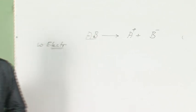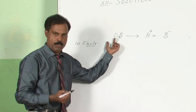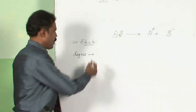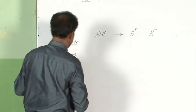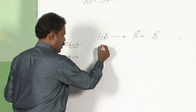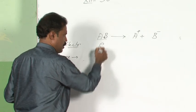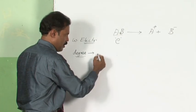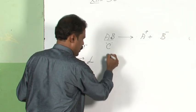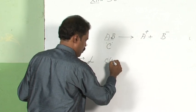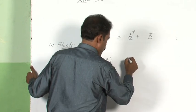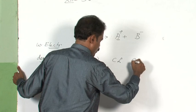As you know, weak electrolytes do not dissociate completely — the dissociation will be only partial. Consider the reaction AB → A⁺ + B⁻, where AB is a weak electrolyte. Let the initial concentration of AB be C mol/L and the degree of dissociation be alpha. The amount of AB remaining would be C(1 − alpha), and the amounts of A⁺ and B⁻ would each be C·alpha.